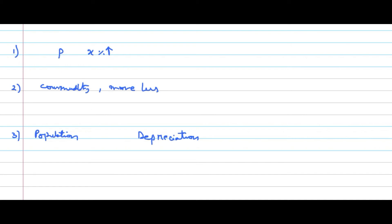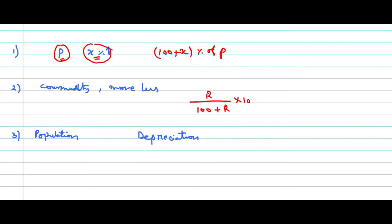On the whole, if a certain value P has been increased by X percent, the increased value is (100 + X)% of P, since P represents 100 percent and it is increased to X percent. Coming to the commodity formula: if the rate is increased by R percent, the reduction in consumption is R divided by (100 + R) into 100 percent.